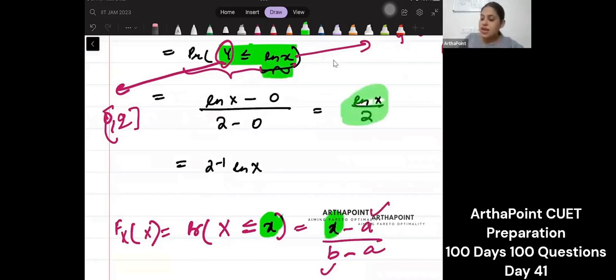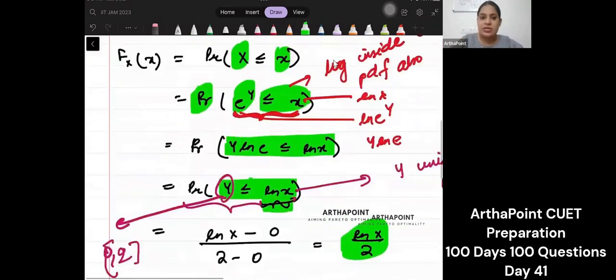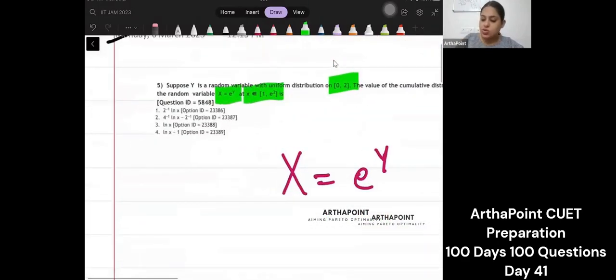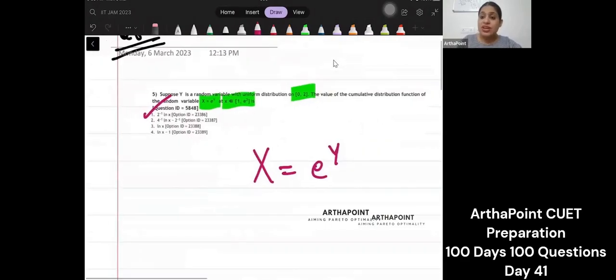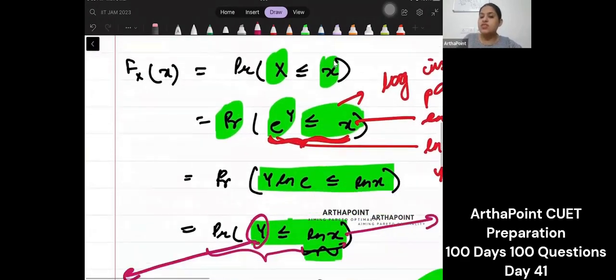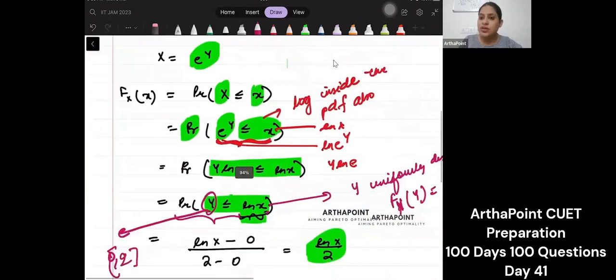Right. So this becomes ln x by 2 which means 2 to the power minus 1 ln x. So my answer to this question will be a. 2 to the power minus 1 ln x. Very very simple question. You just have to do a little transformation here. This is what is important in this question to understand.